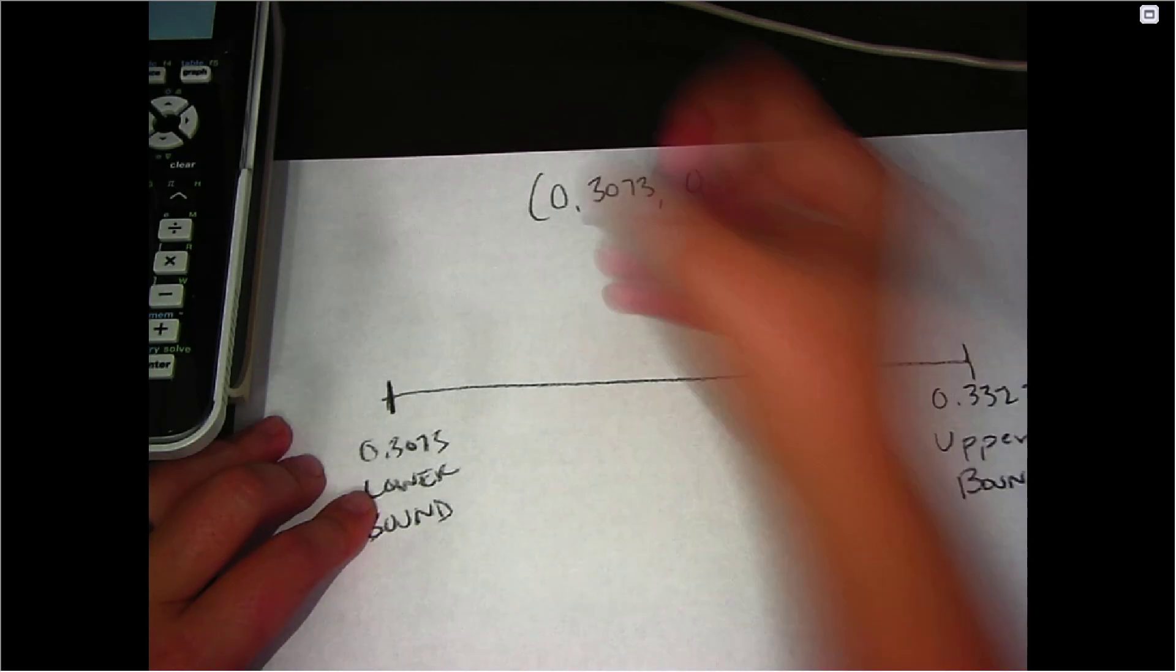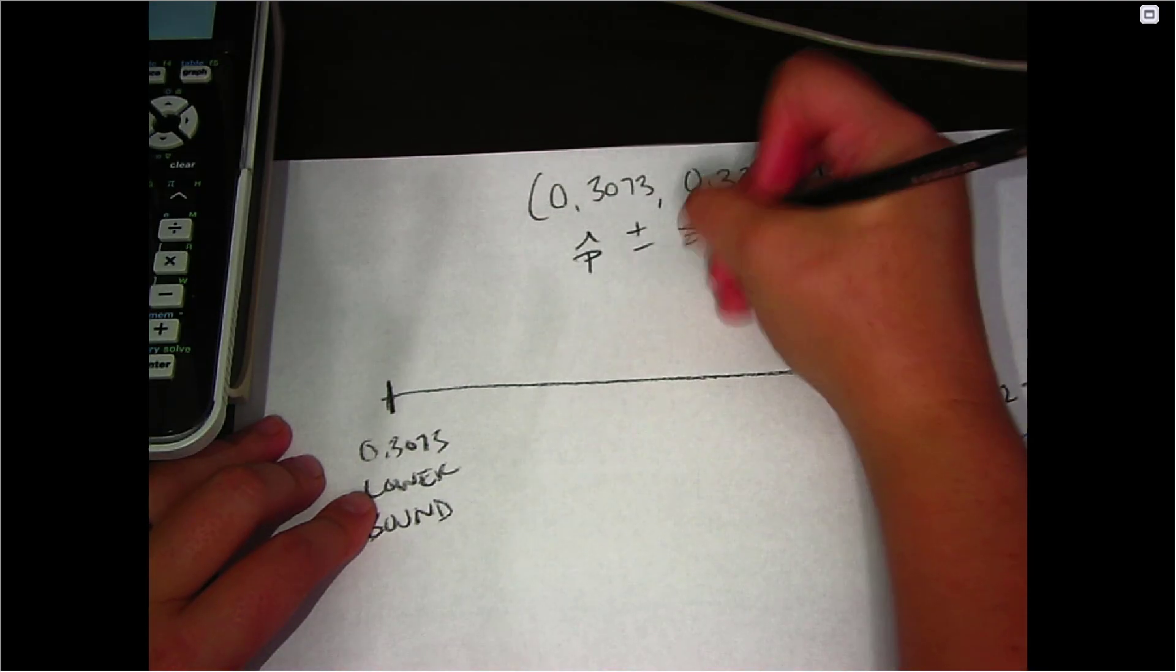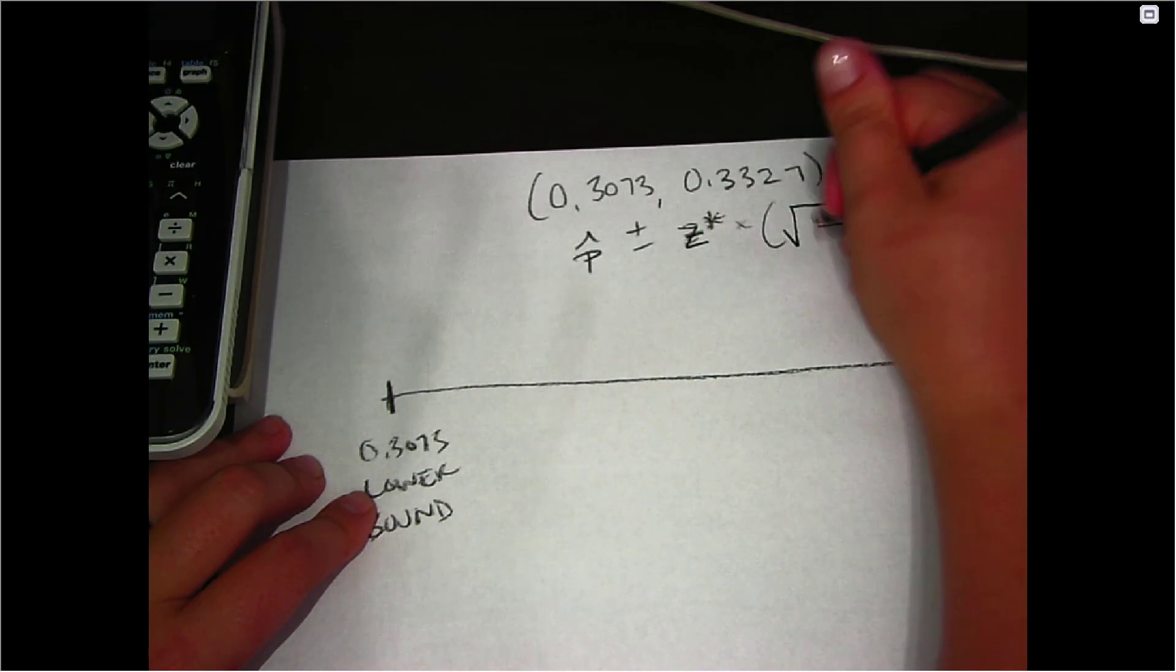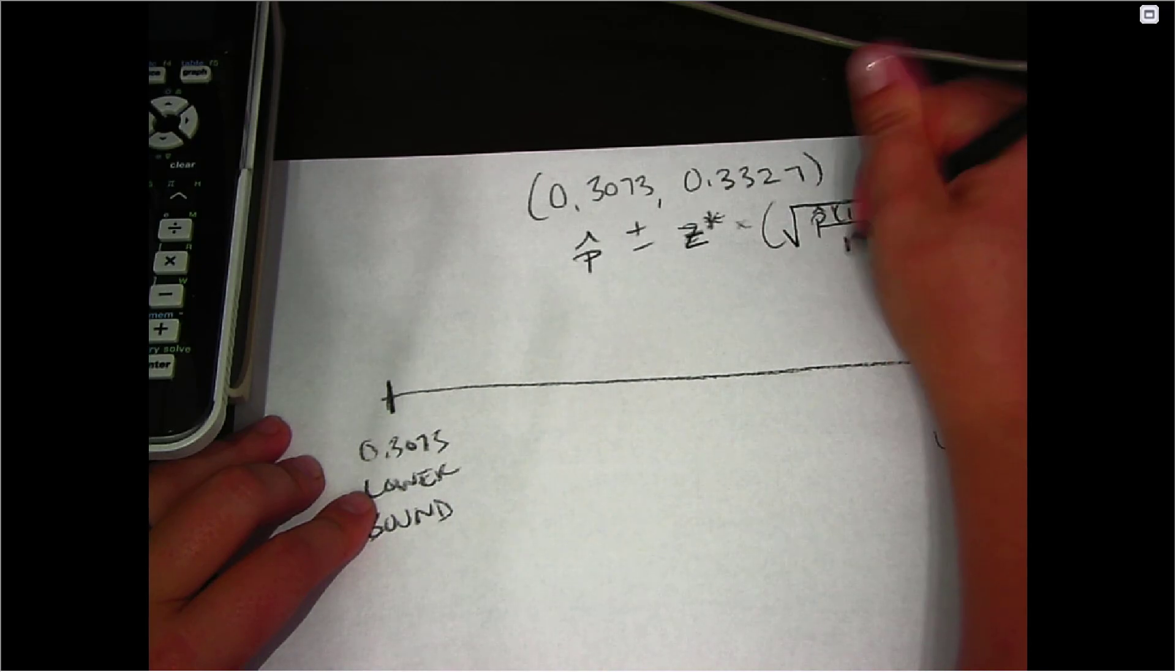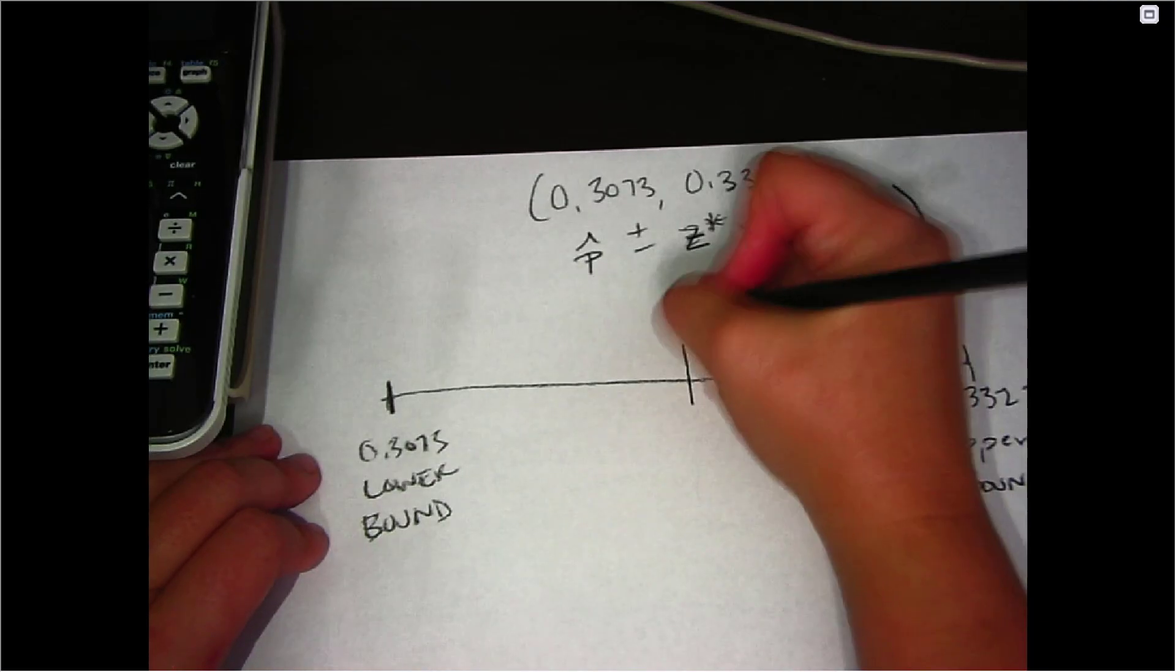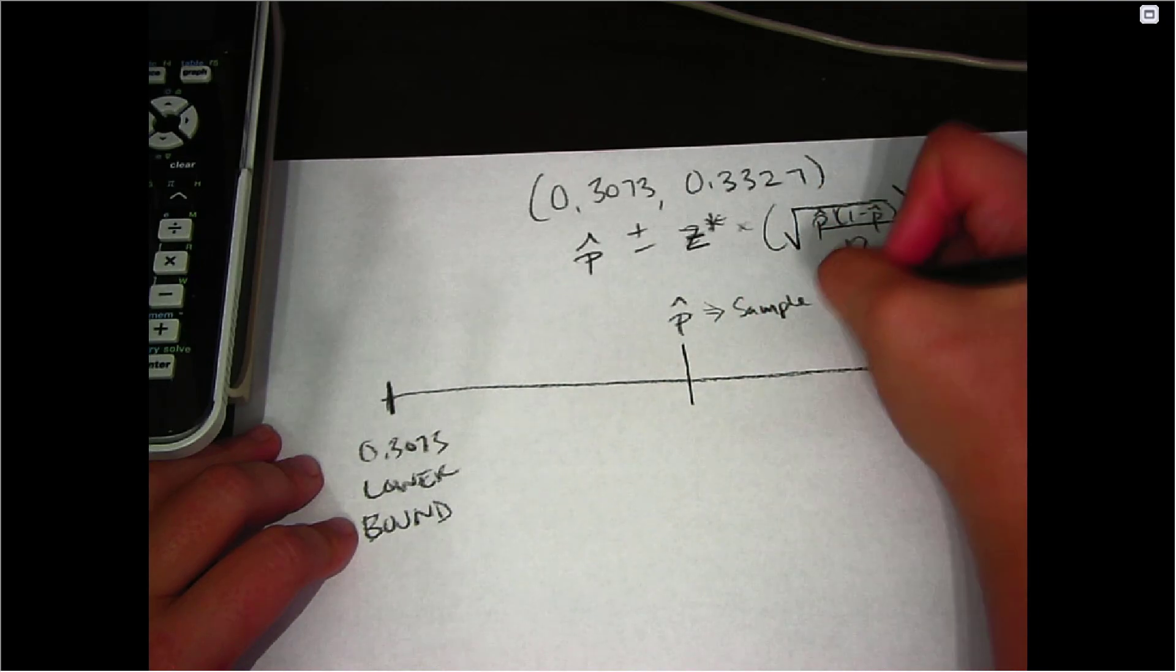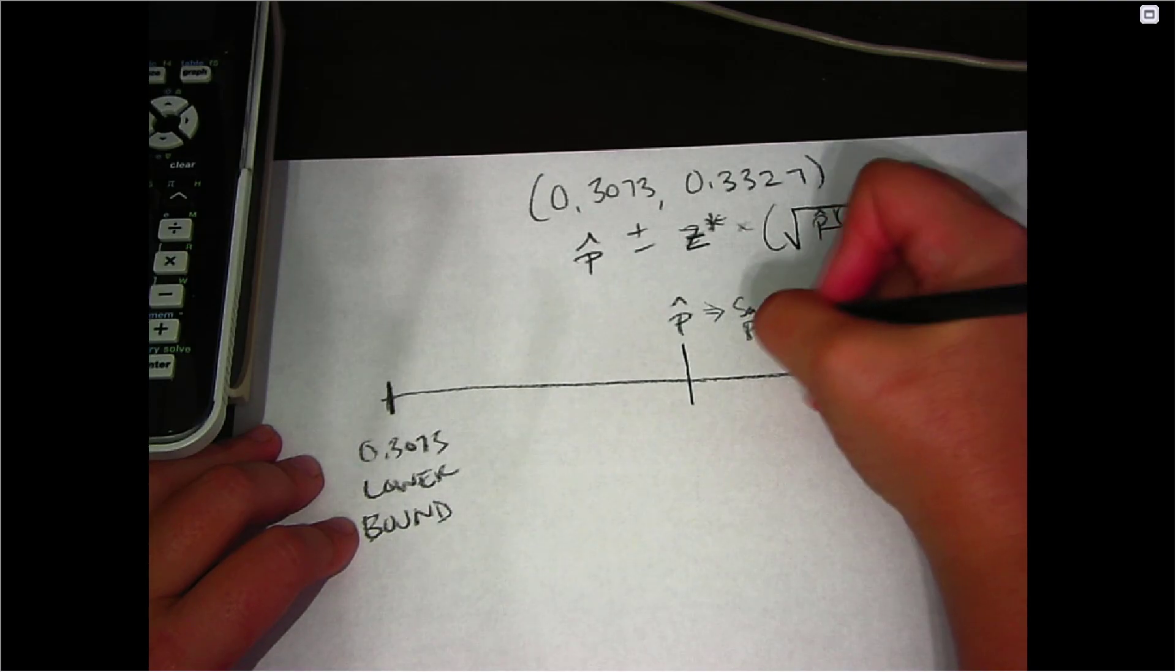Now because the confidence interval is p hat plus or minus your z star times your standard error, I know that p hat is going to be in the exact center. And remember this is also referred to as our simple estimate or your point estimate.